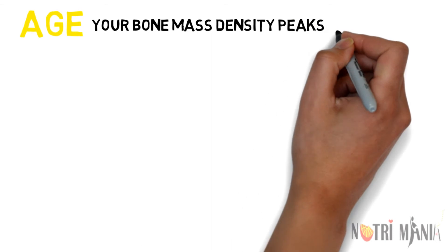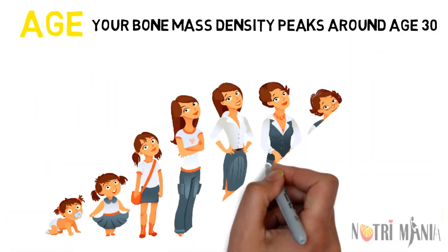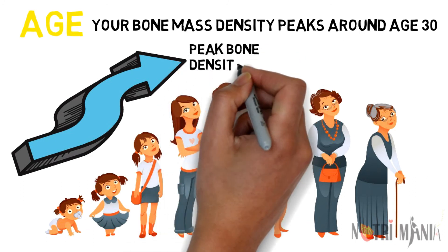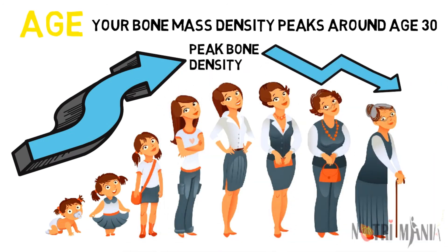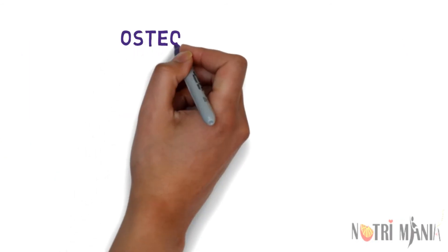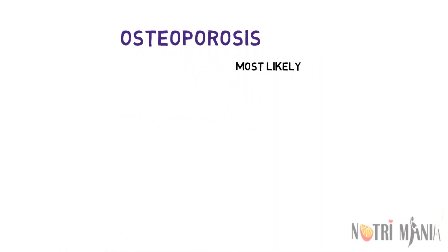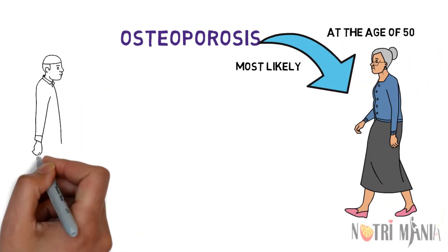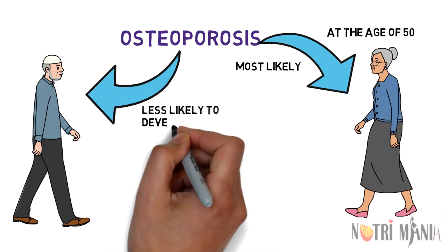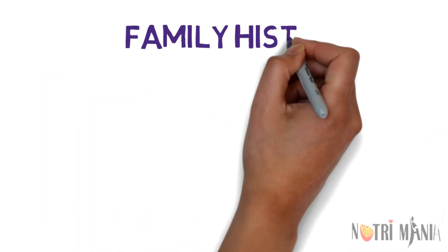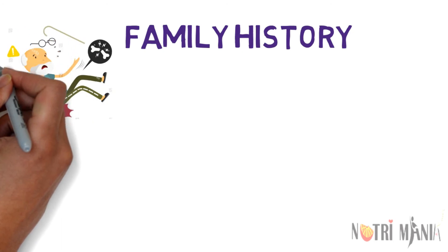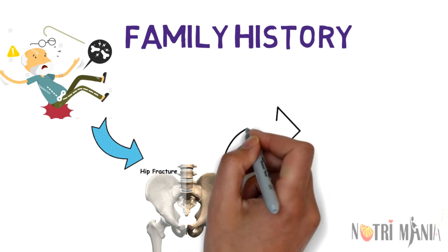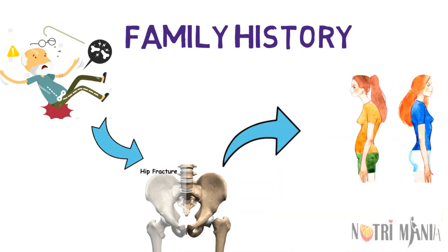Risk factors that make osteoporosis more likely include age — if you are above 30 and your diet is deficient in vitamin D and calcium, you are more at risk. Gender matters a lot: women over the age of 50 are the most likely to develop osteoporosis, four times as likely as men. Family history also plays a role — if your parents or grandparents had signs of osteoporosis, such as a fractured hip after a minor fall, you may be more likely to get it too.